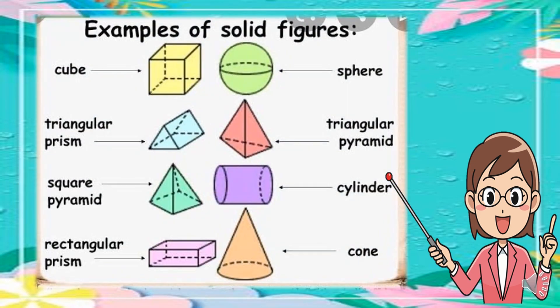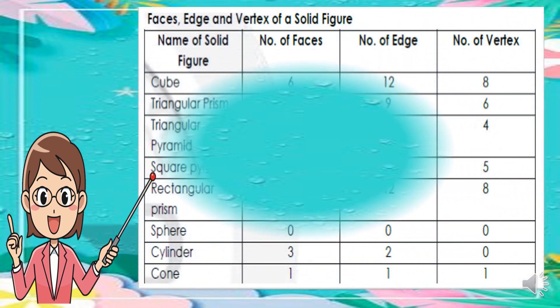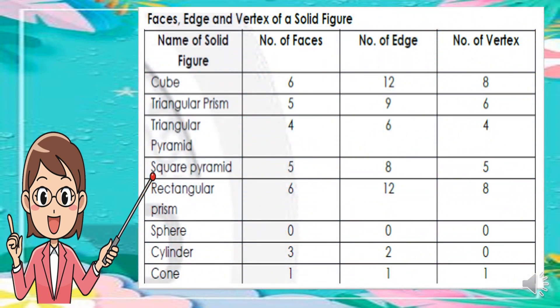Here are the examples of solid figures: cube, triangular prism, square pyramid, rectangular prism, sphere, triangular pyramid, cylinder, and cone. Here are the faces, edges, and vertices of each solid figure — showing the name of the solid figure, the number of faces, the number of edges, and the number of vertices.